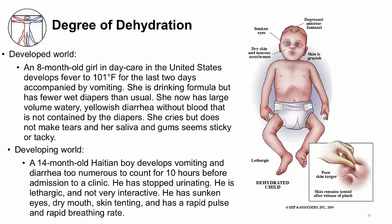I'm going to describe two cases to illustrate degrees of dehydration. The first patient lives in a developed country and presents with acute watery diarrhea from rotavirus. She's an eight-month-old girl in daycare, where transmission from one child to another is very common. She has had two days of fever and vomiting. You should be concerned about her dehydration because of her vomiting. She is very thirsty and trying to drink — that's a good sign. Her parents note that she is having less wet diapers than normal.